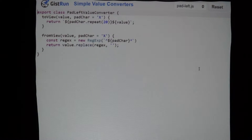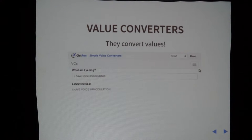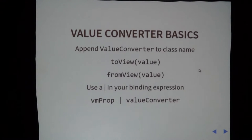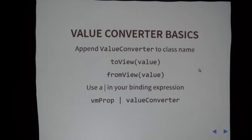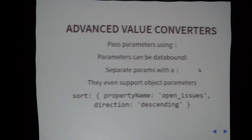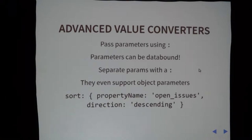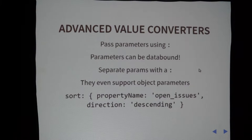The two functions are toView and fromView — put a bar in your binding expression. The VM property, then a bar, then the value converter name, and the property gets passed to it. Then we have the more advanced topics: passing parameters with a colon. These parameters can be data bound, which gets really powerful. If you have more than one, use colons to separate them, and it even supports object parameters.